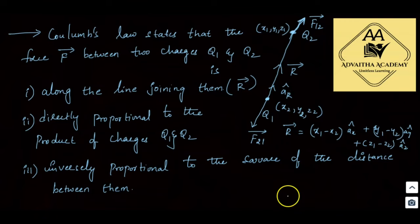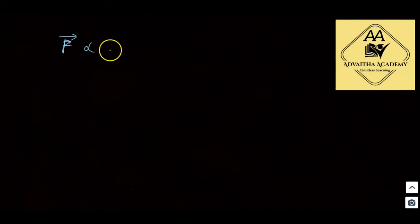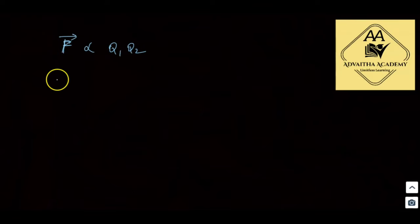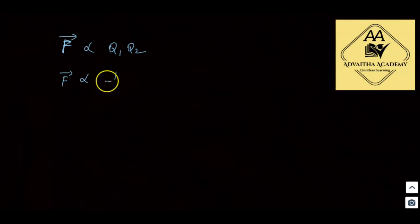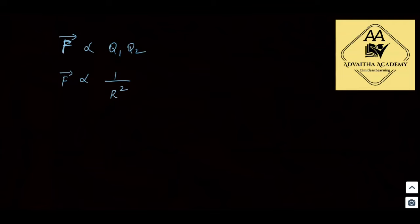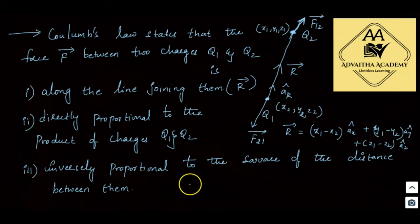From the two proportionality statements: F is directly proportional to q1·q2, and F is inversely proportional to r². Combining them gives F ∝ q1·q2 / r².